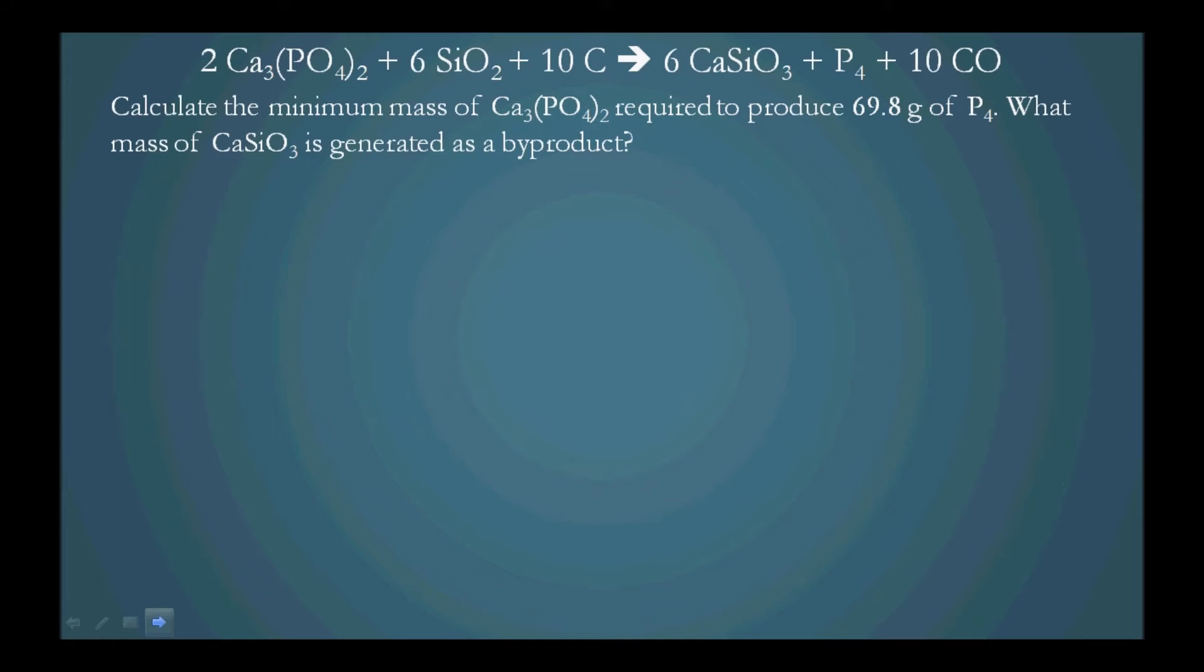So for this problem, we need to determine the minimum mass of Ca3(PO4)2 required to produce 69.8 grams of P4. So how do we go about this? Well, the only real value we know is that we have to produce this amount.